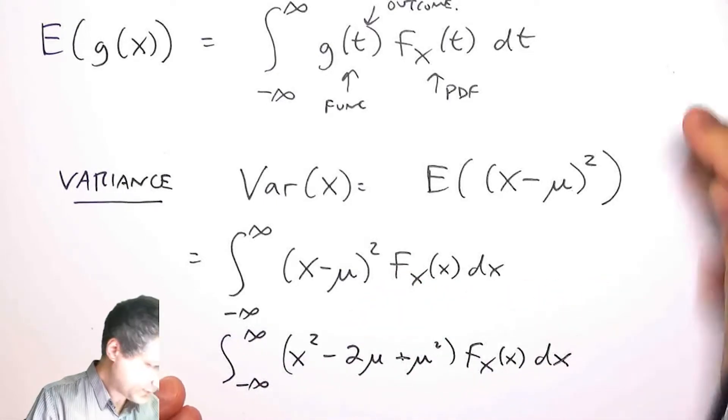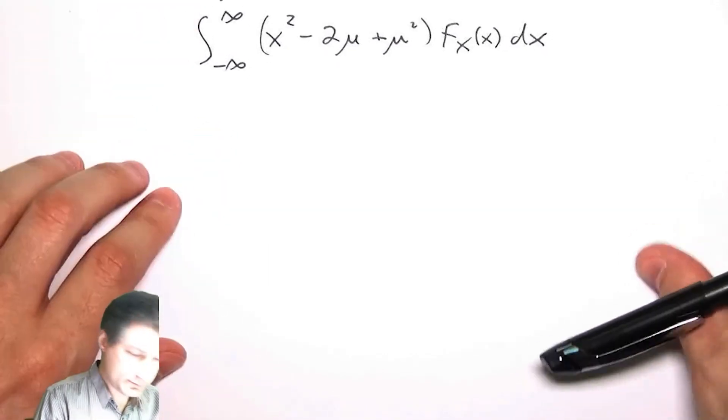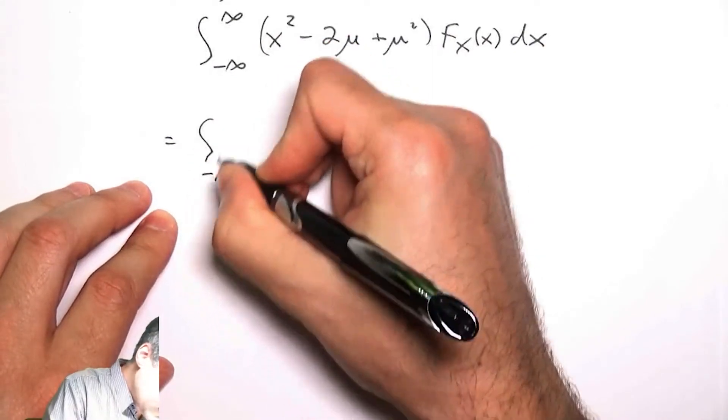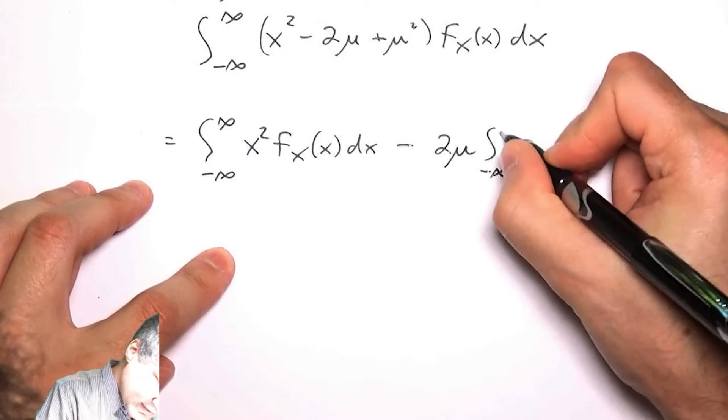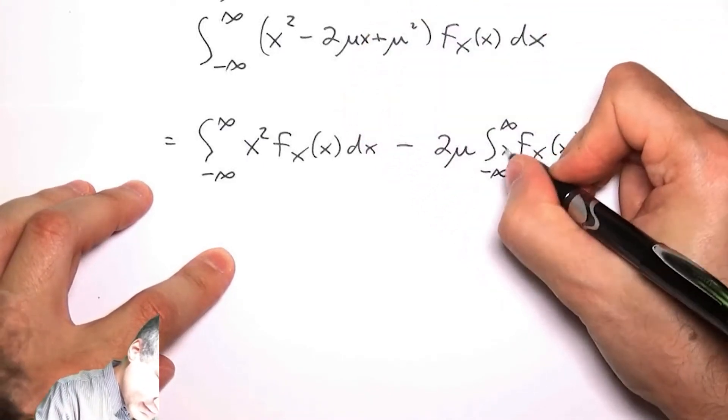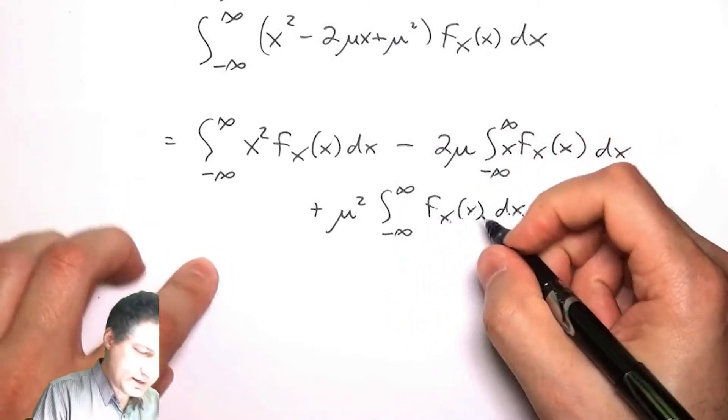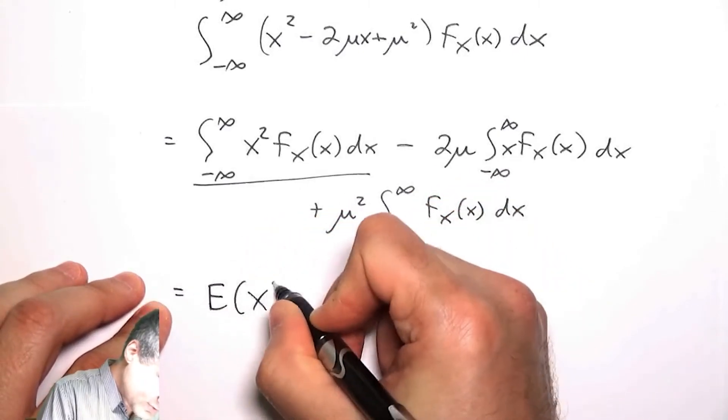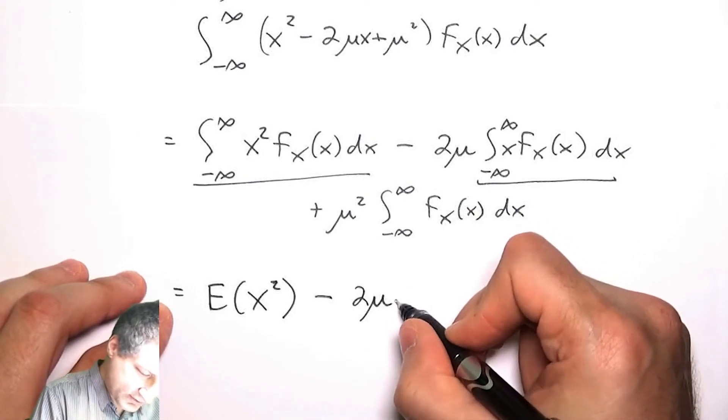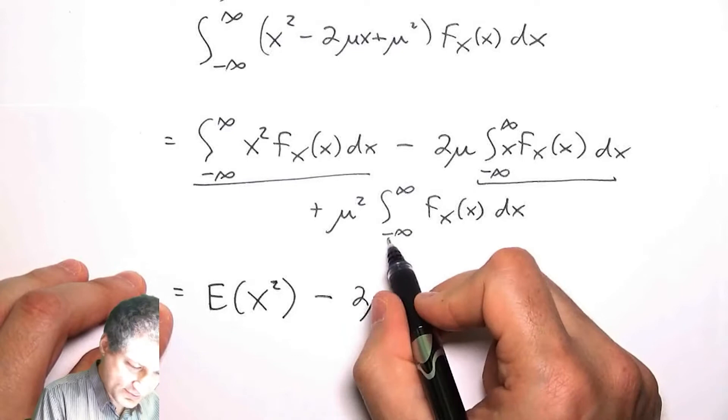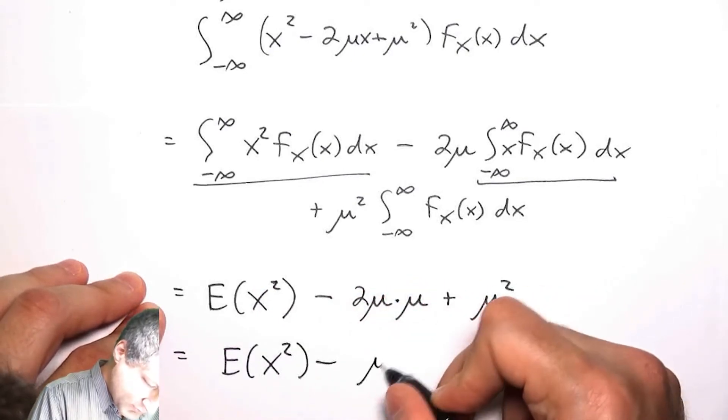This is equal to the integral of X squared times the PDF, minus 2μ times the integral of X times the PDF, plus μ squared times the integral of the PDF. Now, this part here is the expected value of X squared, this part here is minus 2μ times the expected value of X, which gives me another μ, and this here is μ squared times 1 since the PDF integrates to 1.